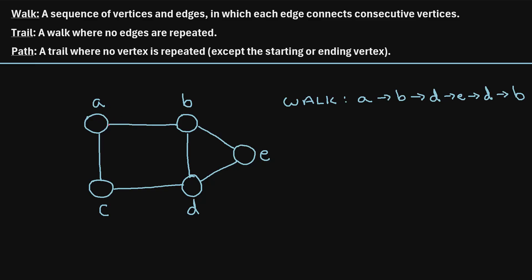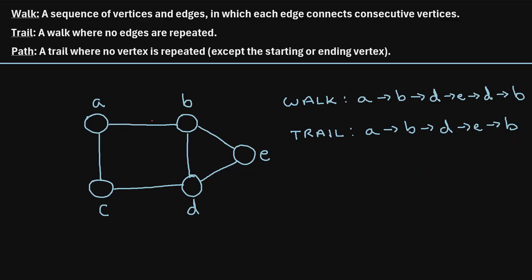Let's check out an example of a trail. Let's say we started at vertex A, then went to B, then to D, then to E, and then to B. This would be an example of a trail. When we went on this trail, we didn't repeat any of the edges — we went A to B, to D, to E, back to B. We did repeat vertex B, visiting it twice, but that's okay and allowed. So that is considered a trail.